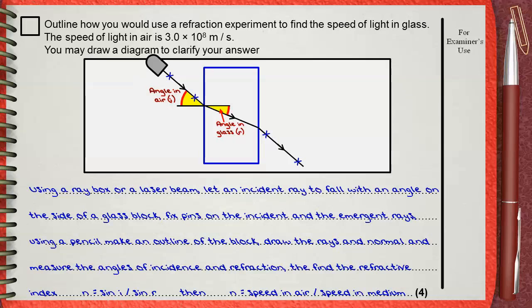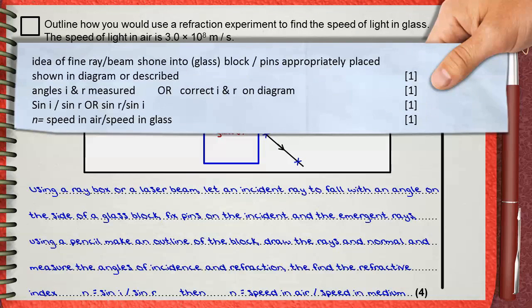The mark scheme offers four marks for this question. The first mark is for any idea of fine ray or beam shown into glass block. Also, if you mention use of pins appropriately placed, either they are shown on diagram or described in words. These are for one mark and this is our first mark.